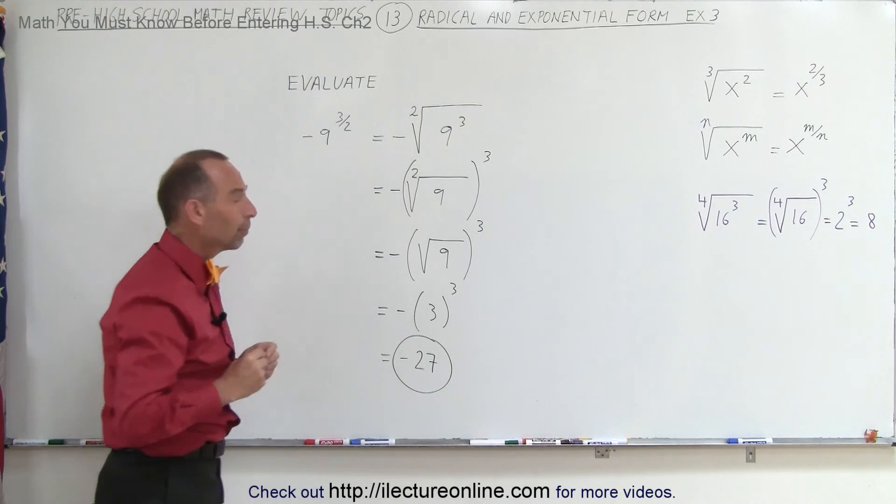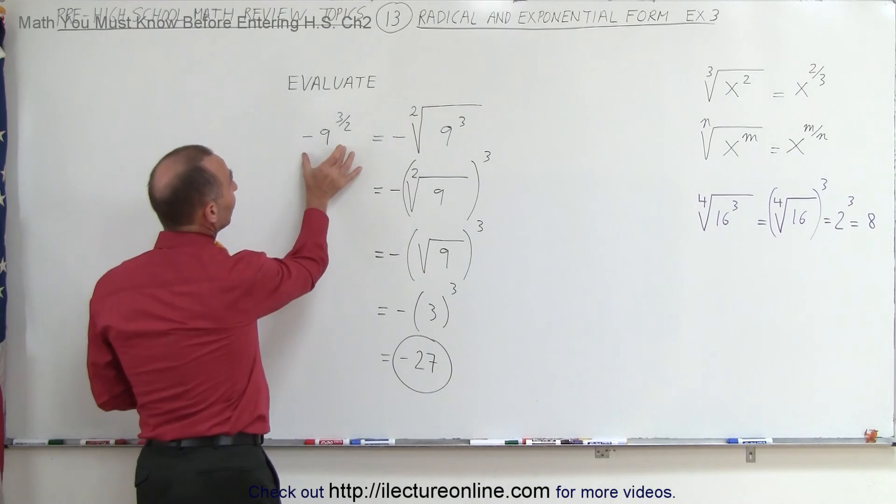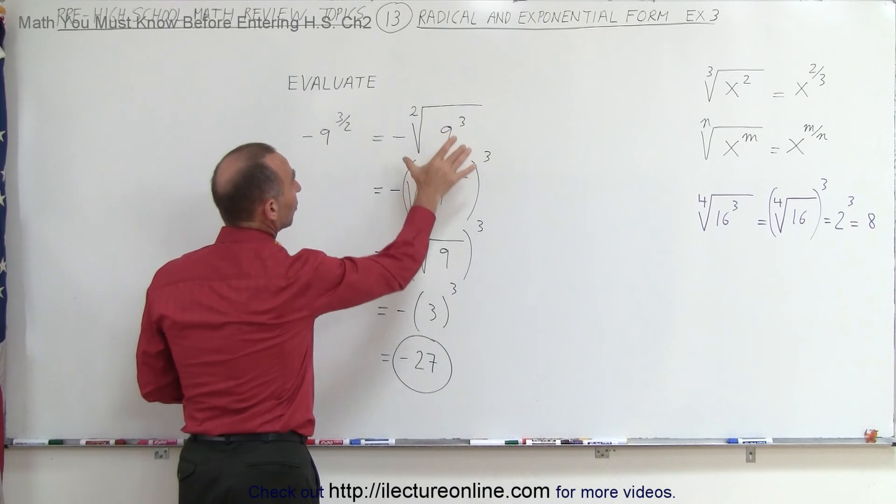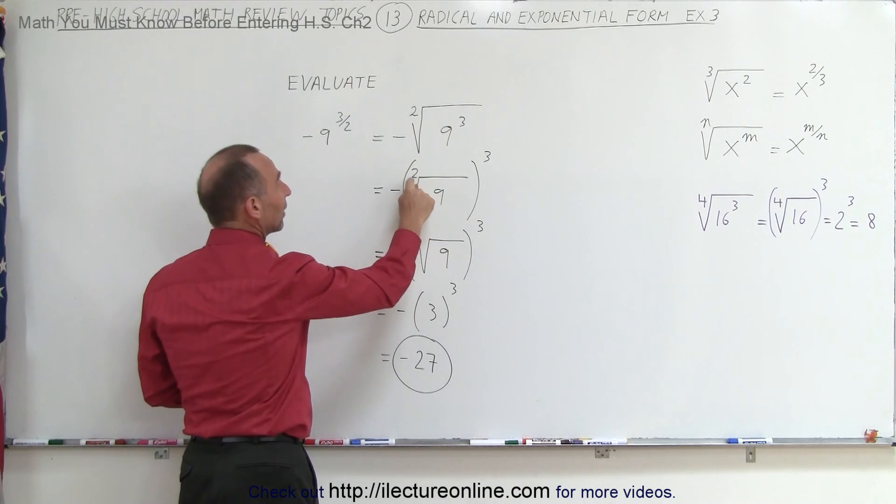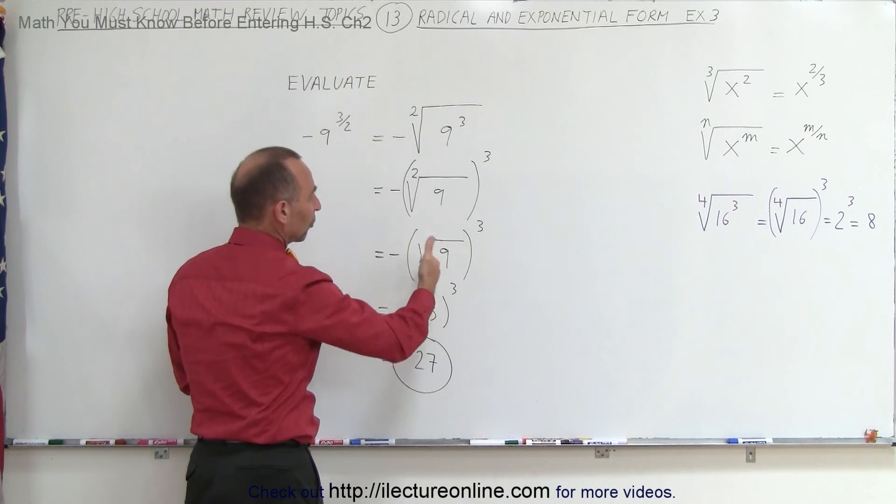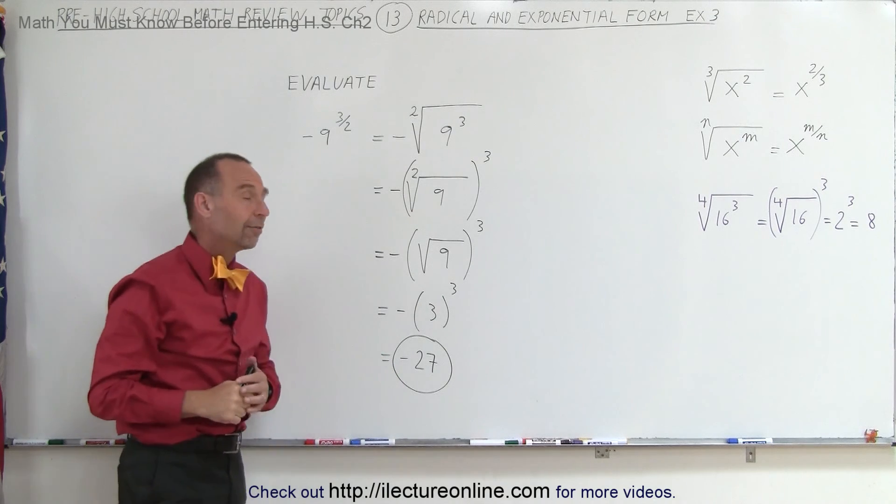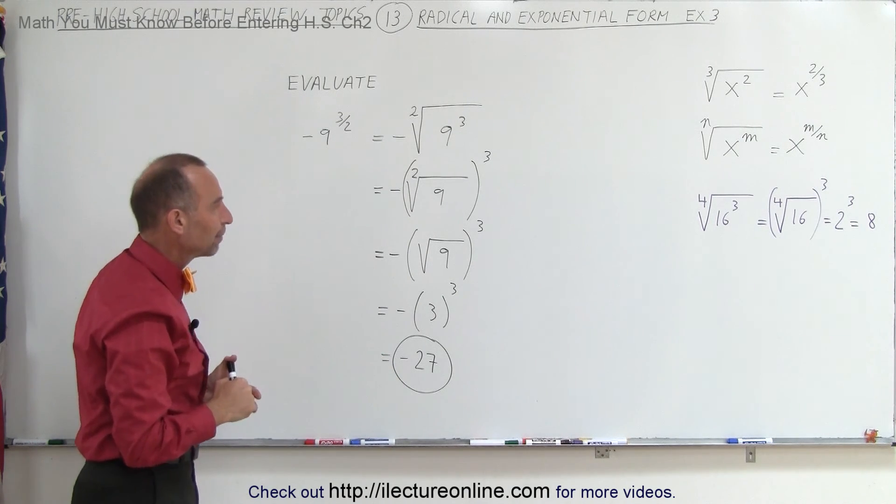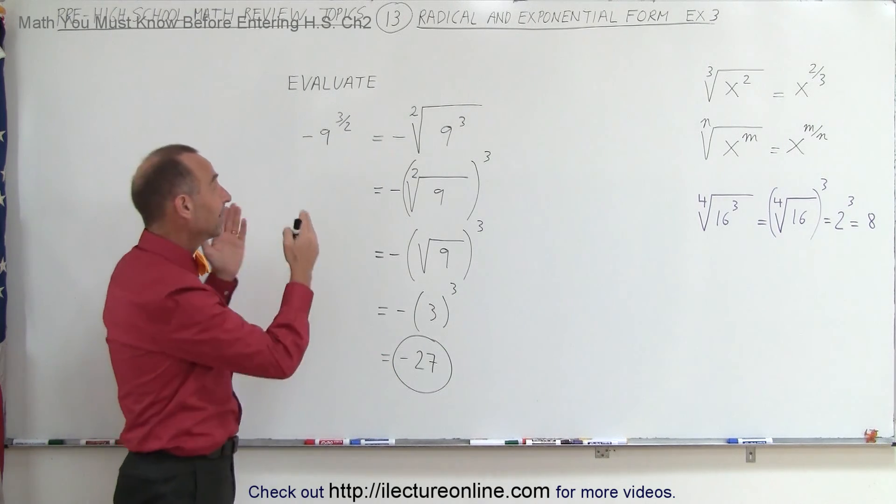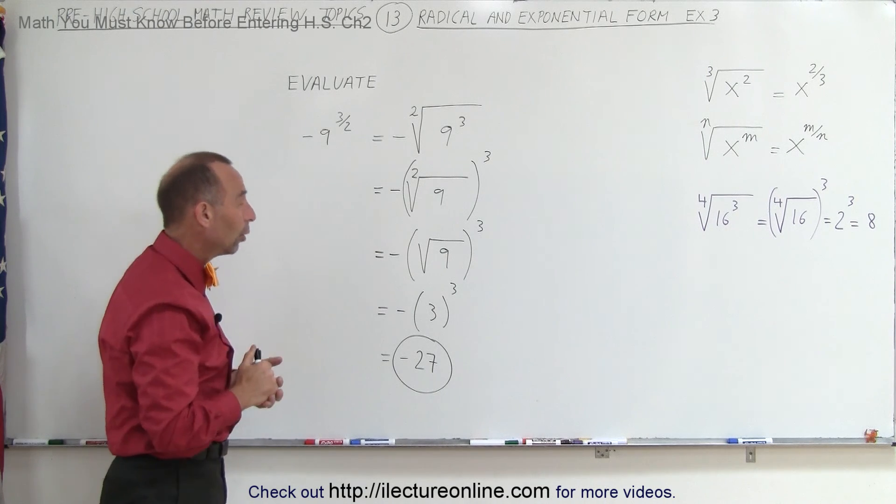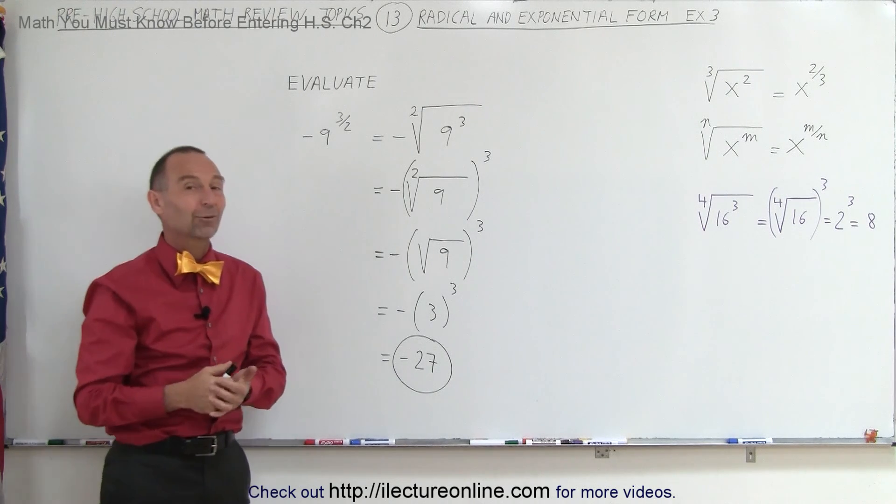So again, it's important to recognize that this can be written as this, which can be written like that. And again, we don't have to write the 2 there. If it's just a square root, you can simply leave the 2 off, and that means exactly the same thing. When you begin to recognize that, these types of problems become a whole lot easier to work with. And that's why we do it like that.